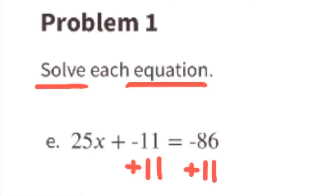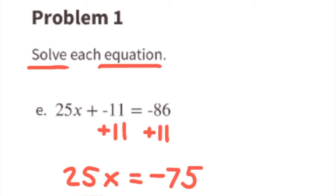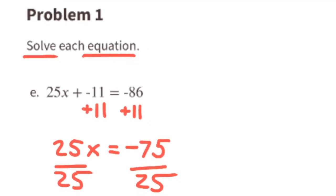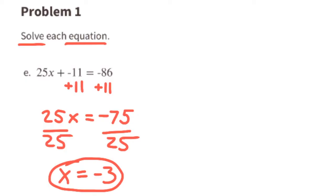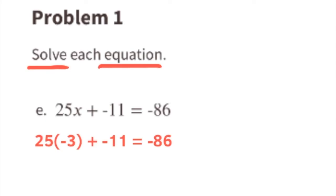Part e: 25x plus negative 6 equals negative 6. Add to both sides to isolate the variable. Divide both sides by 25 and you get x equals negative 7. We can verify: negative 7 times 25 plus the constant gives us the correct result, confirming x equals negative 7.